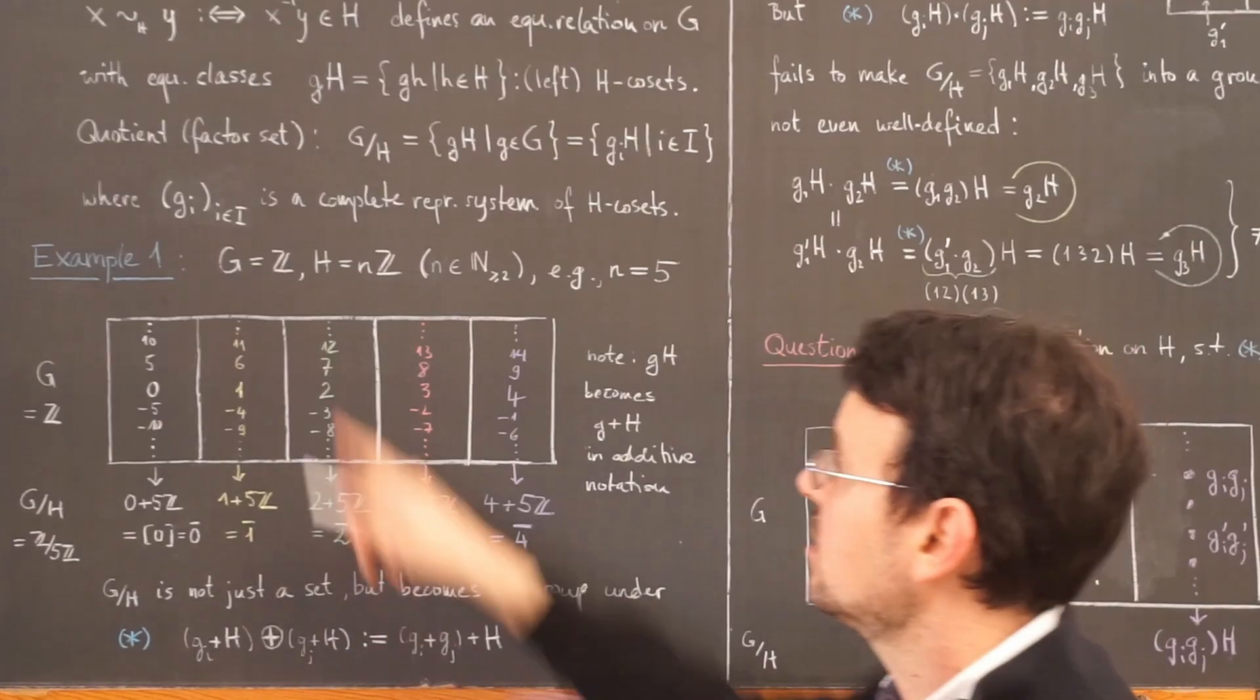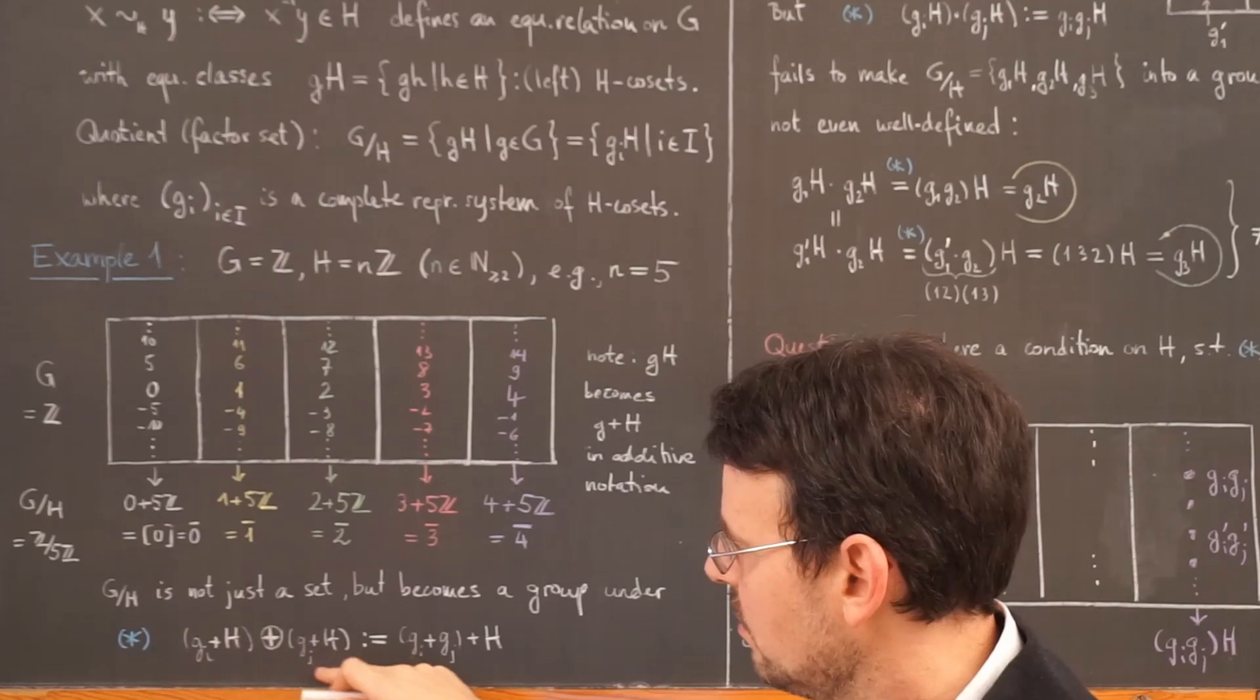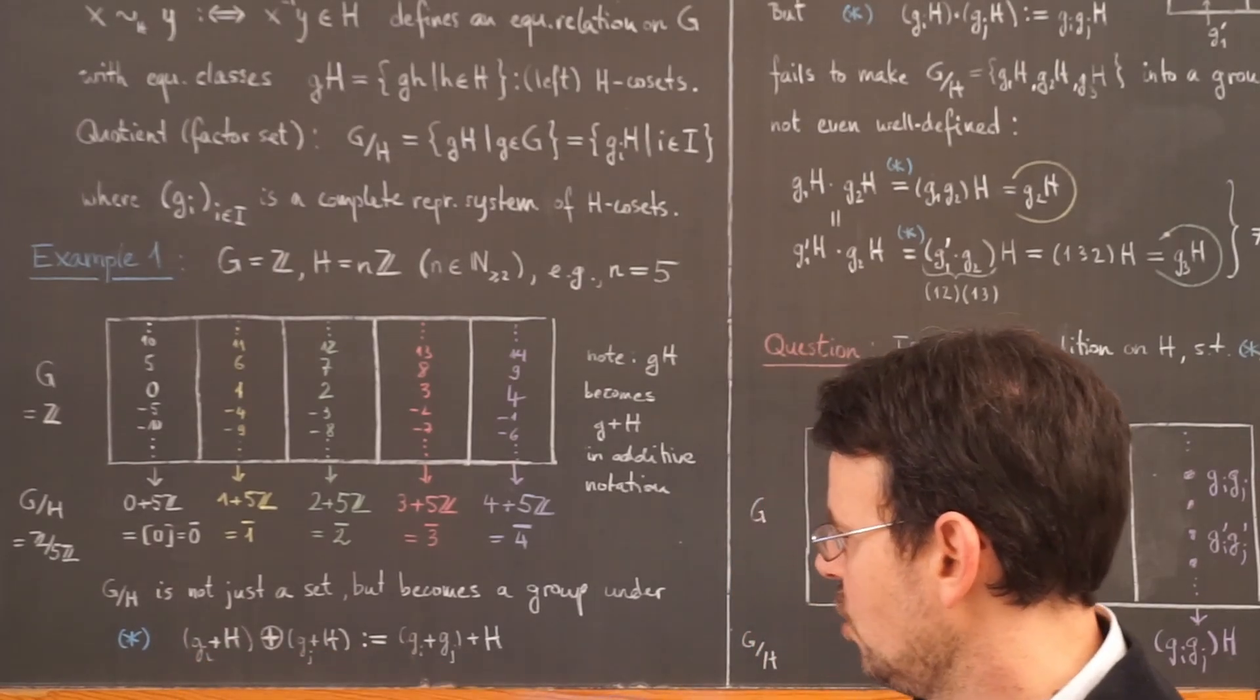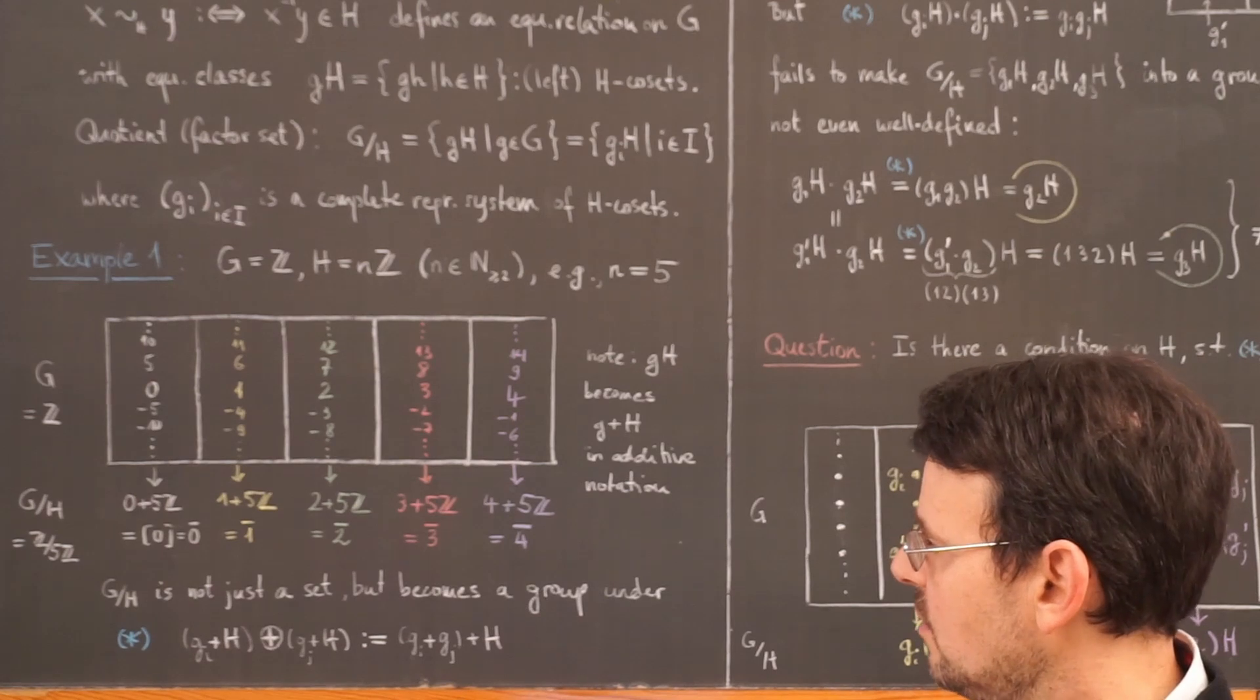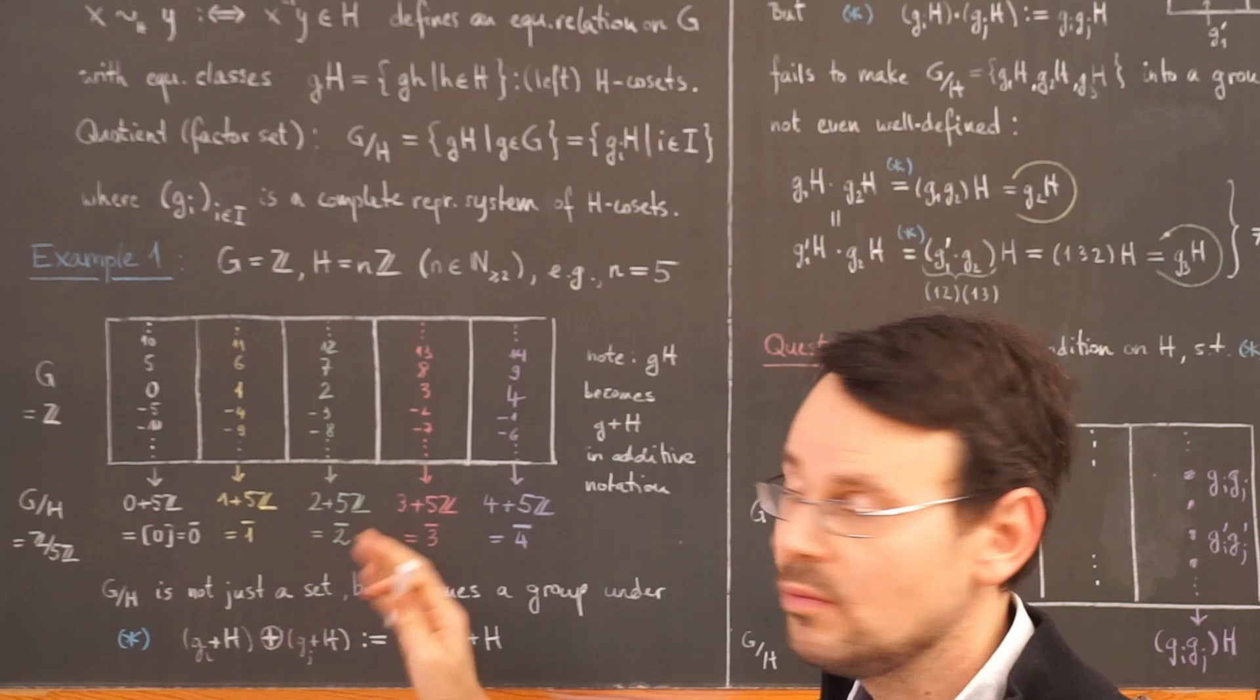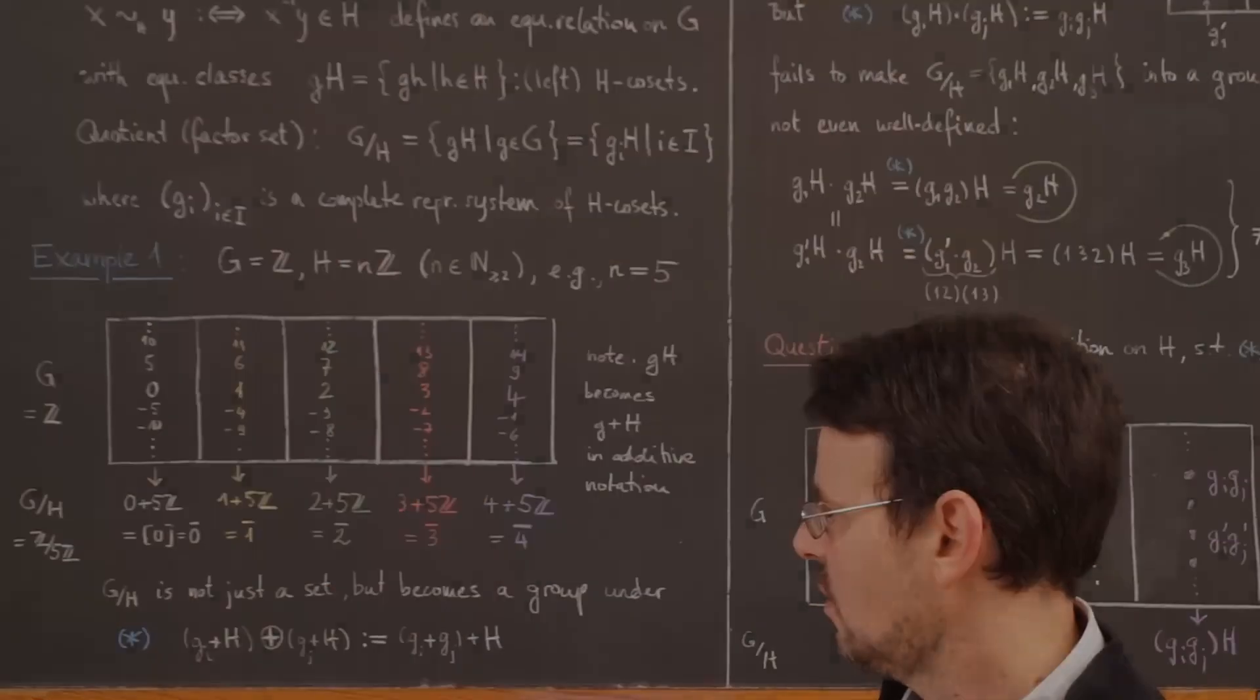And that this here better fits with our previous notation and the notation in the next example, I call these representatives here g sub i and g sub j. So by simply adding the representatives I end up with a well defined addition that gives me the structure of an abelian group. This however does not work for any subgroup as the next example is going to show.